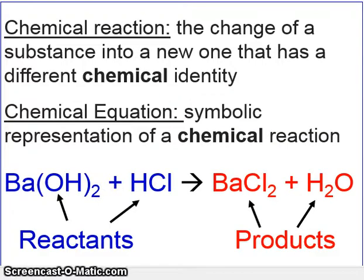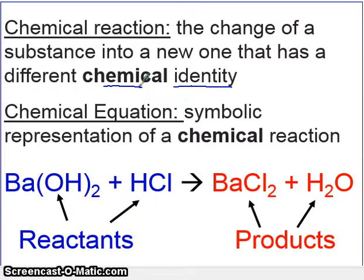A quick review of what a chemical reaction is. A chemical reaction is the change of a substance into a new substance, and because it's a new substance, it will now have a new identity, a new chemical identity, which means it will have new properties. So really, it's any time we form a new substance. That's what we mean by a chemical change.